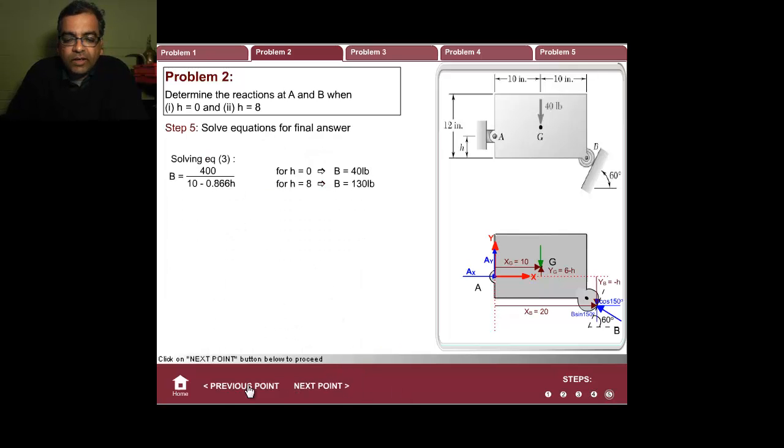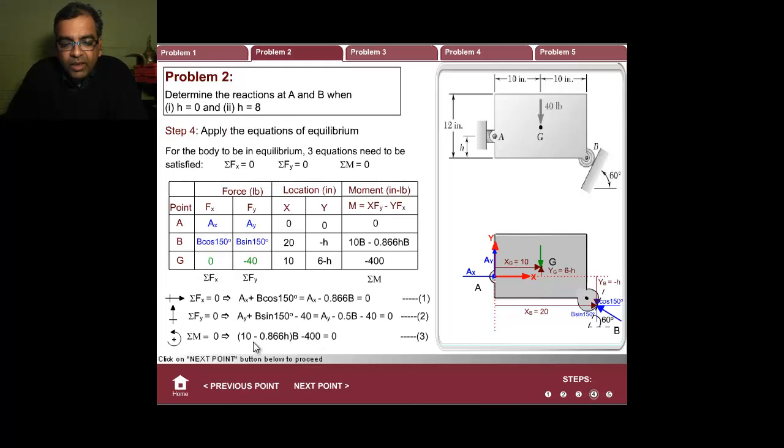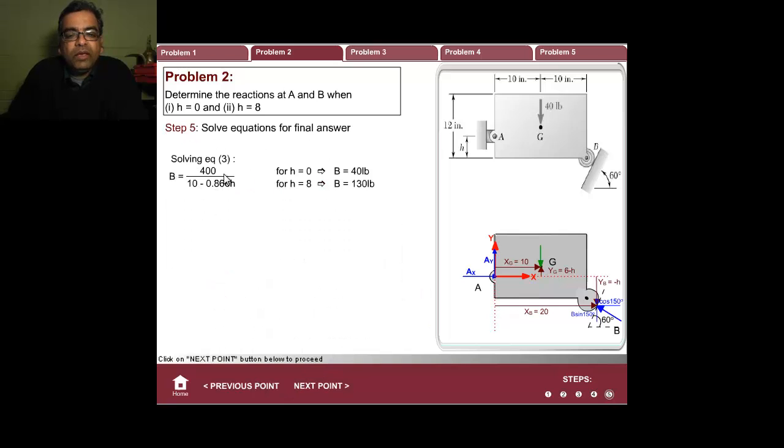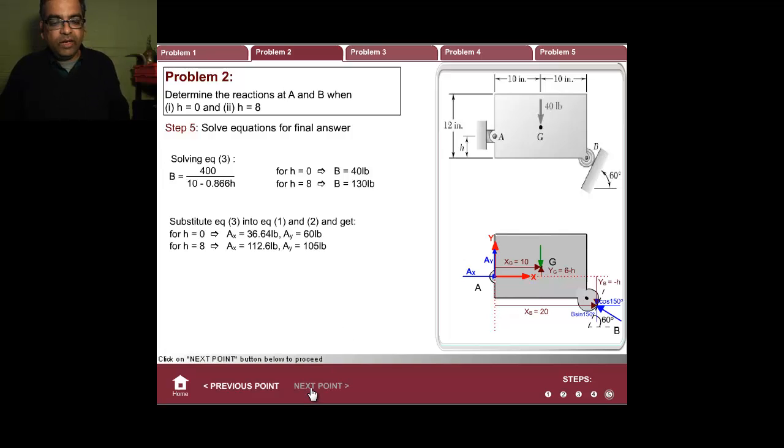First thing to do, solve for B from here. It will turn out B is 400 over (10 minus 0.866h). For h equal to 0, B is 40 pounds. For h equal to 8, B is 130 pounds. Excellent. Once you get that, you can substitute and you can find Ax and Ay. There you go. And we're done.